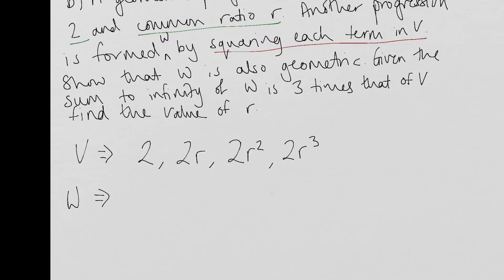W. So if I take the first term and square it, I get four. If I take the second term here, this 2R, and square that, be careful, that's going to give you 4R squared. If I take the next term and square that, I'm going to have 4R to the power of four. And the next term, I'm going to have 4R to the power of six.